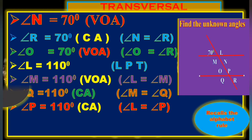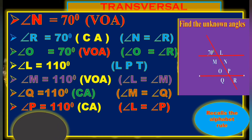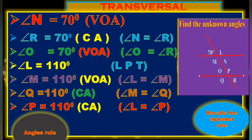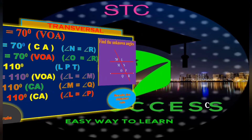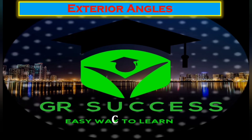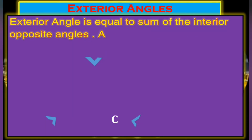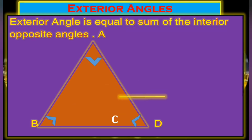Now if you have a transversal, you can use these five types of transversal angles. If you are confused, apply the triangles principles. Next is the triangles principles. Transfers compare to the triangle principle: the exterior angle is equal to the sum of the interior opposite angles.